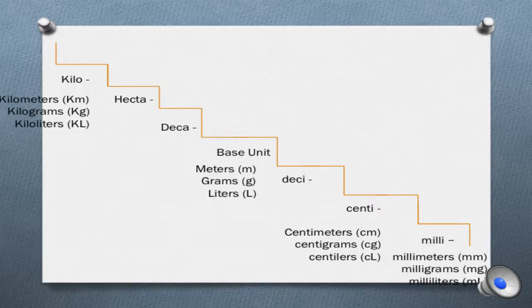First off, we've got to understand that we start with our base unit. This could be meters, grams, or liters. It's here in the middle. We also have centimeters, which is one of our other focus units. So we could have centimeters, centigrams, centiliters. Centi is a prefix.